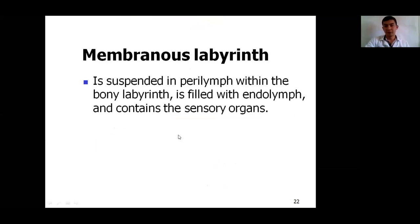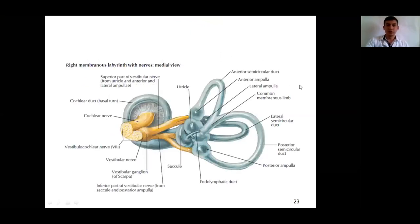The membranous labyrinth is suspended in perilymph within the bony labyrinth and is filled with endolymph. It contains the sensory organs. In this diagram we see the membranous labyrinth with the branches of the eighth cranial nerve — the vestibulocochlear nerve, also known as the statoacoustic nerve. This nerve has two branches: the cochlear branch, responsible for hearing sensation, and the vestibular branch, responsible for equilibrium and some reflexes.